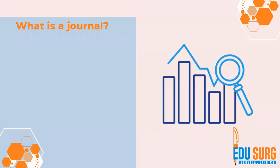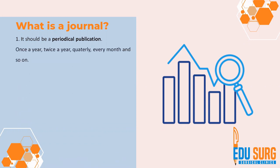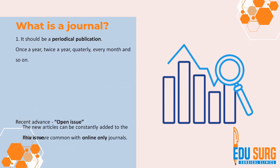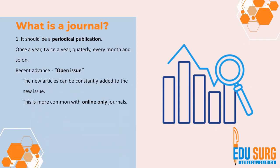What is a journal? You can get hospital magazines and society magazines, but they are not all journals. There are three important points to check before selecting a journal for publication. One is it should be a periodical publication — it can be once a year, twice a year, three times a year, and so on.